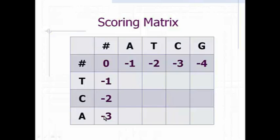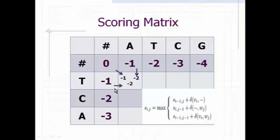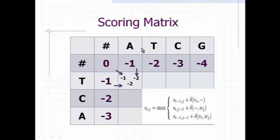Now for the other boxes — for any box, we consider 3 neighboring boxes: from the left side, from the upper side, and from the diagonal direction. For the top and left values, we count the values adding the gap penalty. Here we have minus 1 and the gap penalty is minus 1, so from the top direction we get minus 2. From the left direction, we also have minus 1 plus gap penalty minus 1, giving minus 2. From top we get minus 2 and from left we get minus 2.